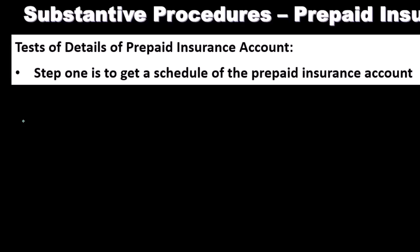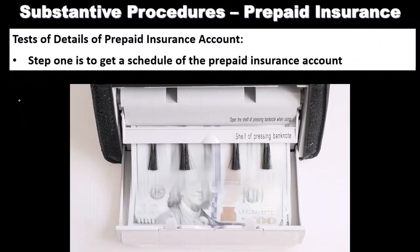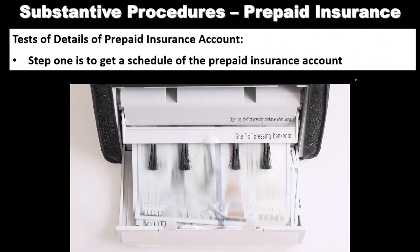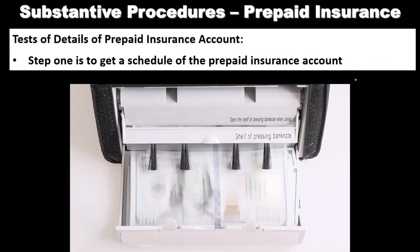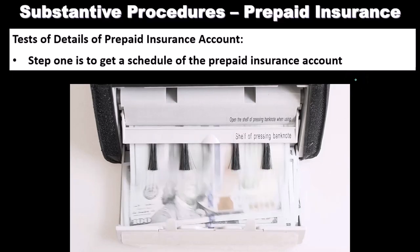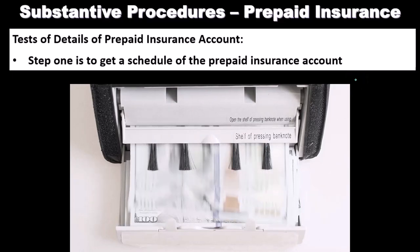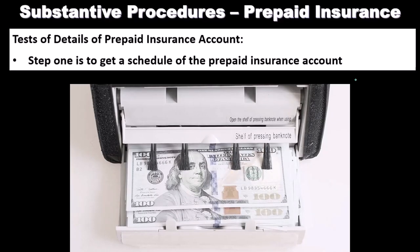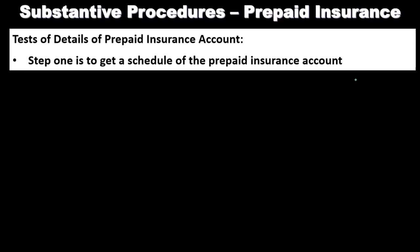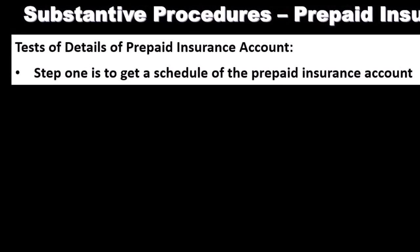In the test of details of prepaid insurance accounts, step one is to get a schedule of the prepaid insurance account. We're going to need a schedule and the policy — those are the two things we typically need. If we get the trial balance, we look at prepaid and pull the GL account. Most of the time the company will be posting their payments to the GL account of prepaid insurance, and if they're a publicly traded company, they should be doing the month-end reconciliation, which we then review.